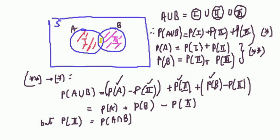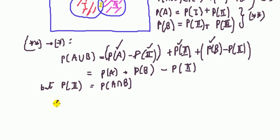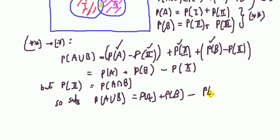And, we are done. So, finally, we can say, substitute this into this. So, we have probability of A union B equals the probability of A plus probability of B minus, just substitute for this. And, we are done.